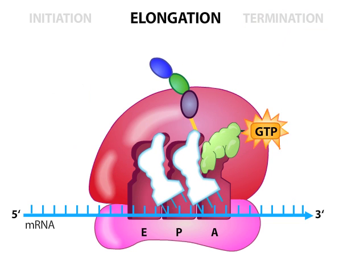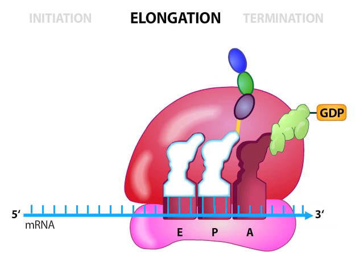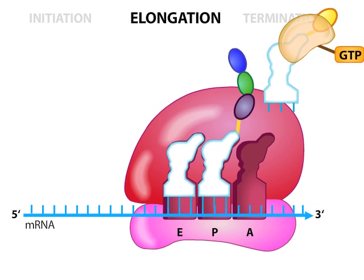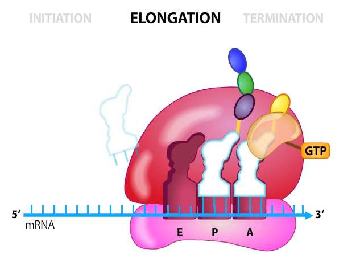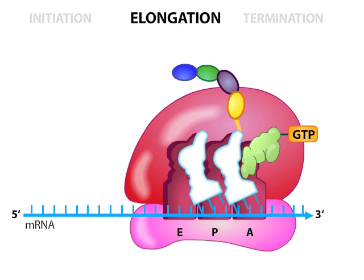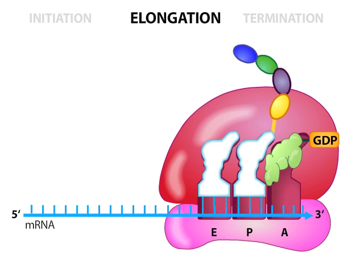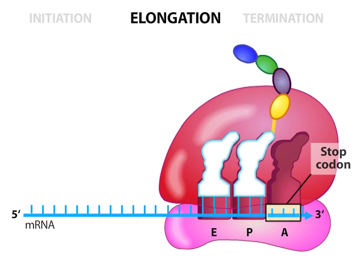These elongation steps repeat along the mRNA. The ribosomes of E. coli can speed through these elongation steps, linking together 16 amino acids per second. Eventually, the ribosome arrives at the end of the coding region, marked by one of three stop codons. This stage of translation is called termination.